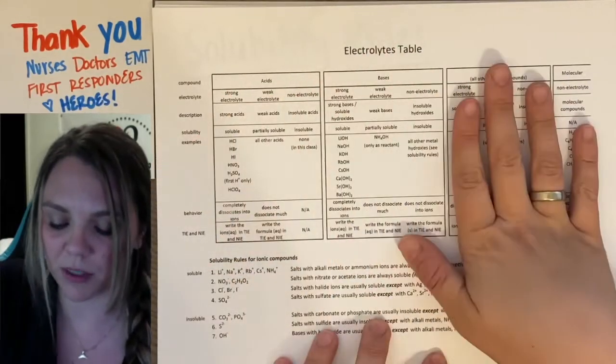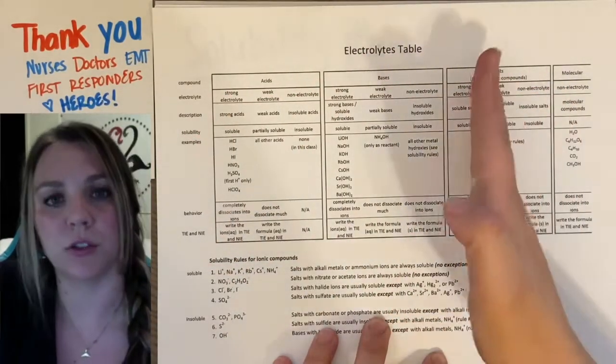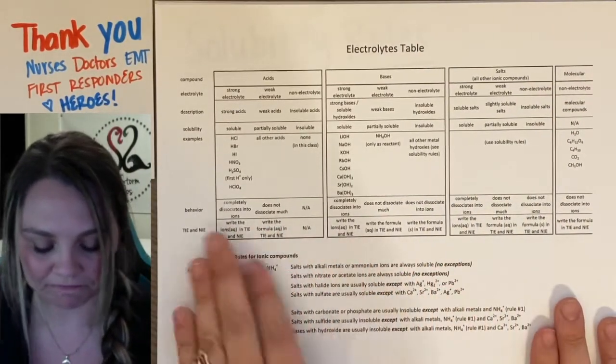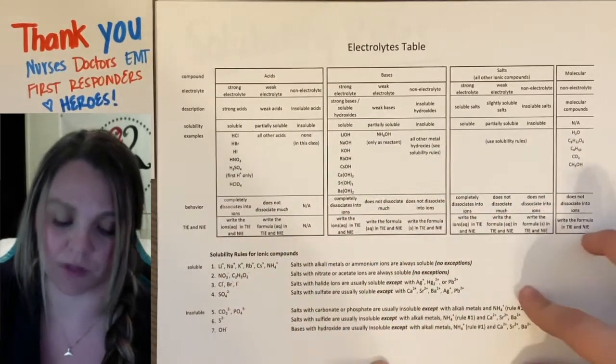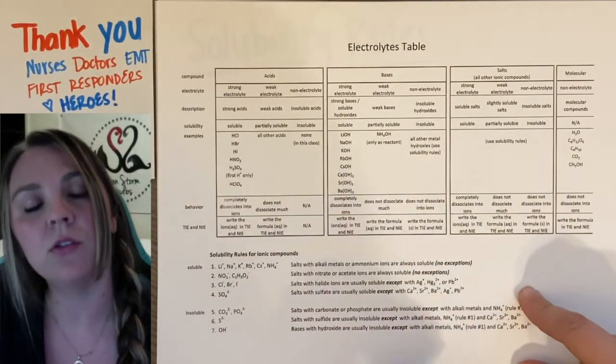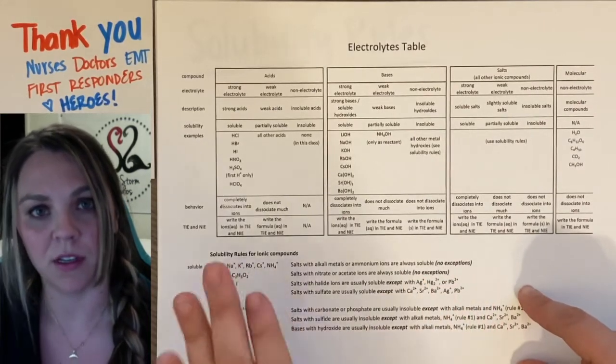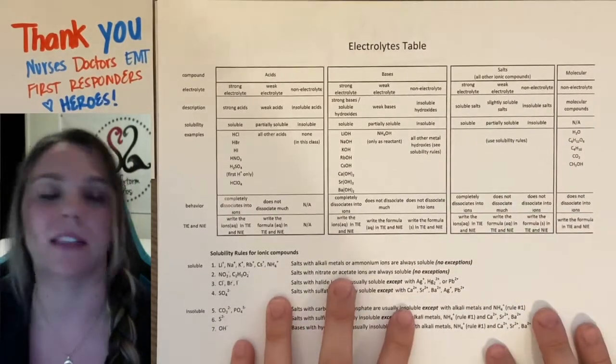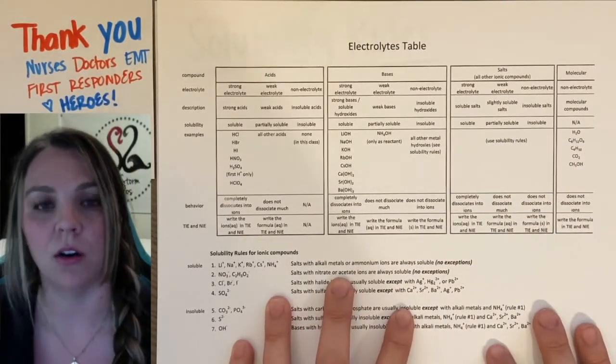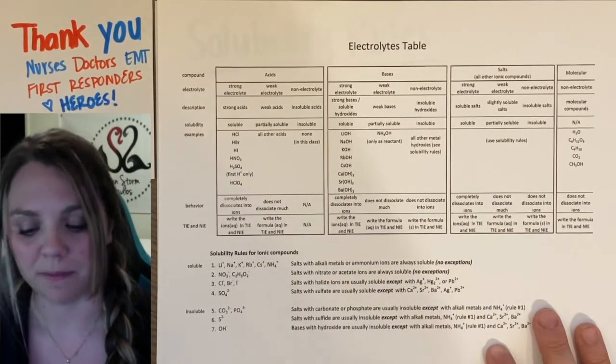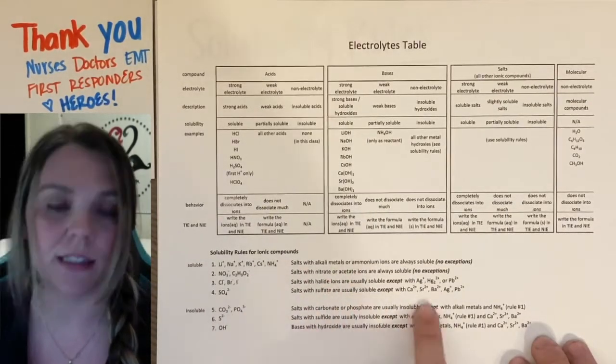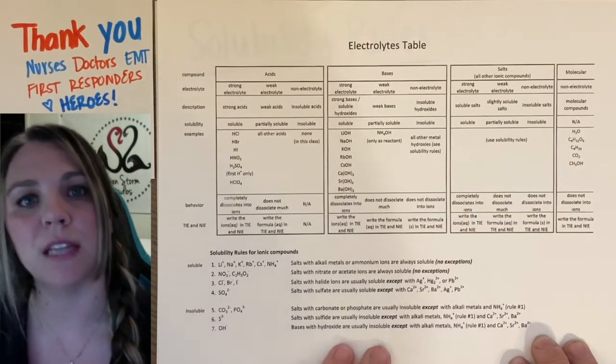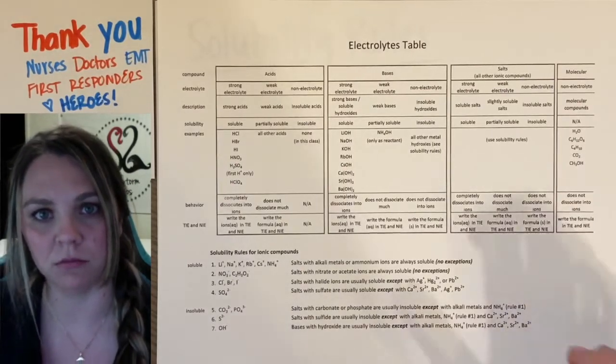Basically, what this table is trying to help us figure out is if something is a strong, a weak, or a non-electrolyte. So, the section we're going to look at right now are the solubility rules for ionic compounds. Really super key important that we understand these rules. Your book actually lists these in a different order, doesn't matter, they're all the same rules, and that's on page 210 of your book.